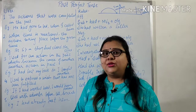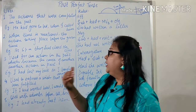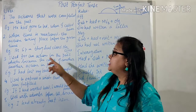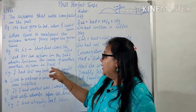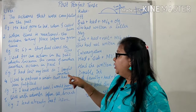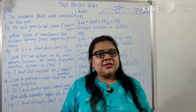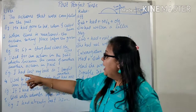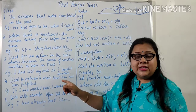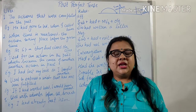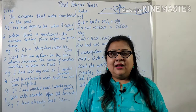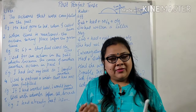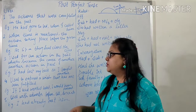Coming back to the third application — used for an action in the past which became the cause of another action in the past. For example: 'I had lost my book, so I bought another one' — she needed a second book because she had lost the first. Another example: 'He was very sad because his son had failed.' Please, don't make anyone that sad — we all have to pass!